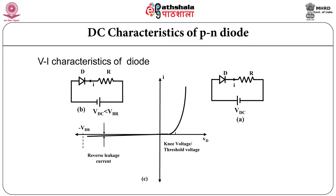Now if you apply reverse bias, very negligible current flows. If you further increase that voltage then you will see that there is a sudden increase of current, and if that current is not limited the diode may break down or it may damage. So this is called as the breakdown voltage. In the first quadrant current is increasing exponentially, but in the third quadrant current is almost constant.